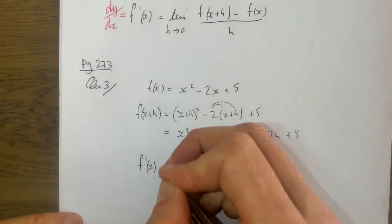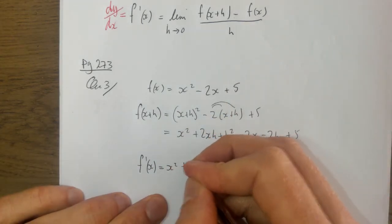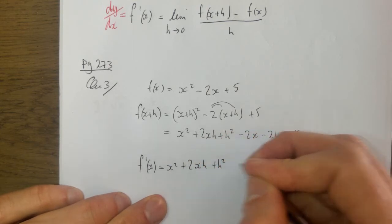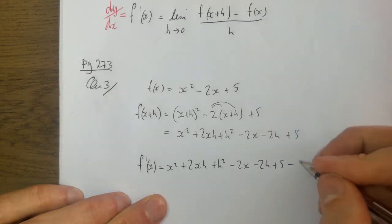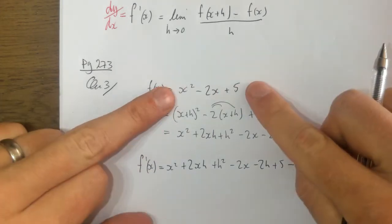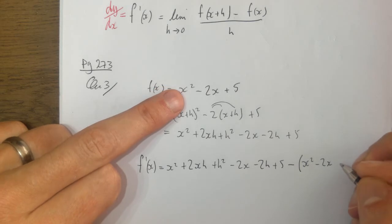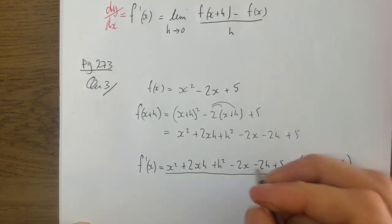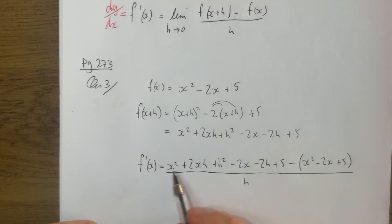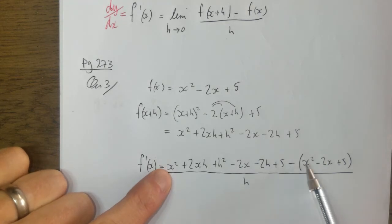So we write f dash x, which is differentiating: f of x plus h - which is the expanded expression - minus f of x, put that in brackets so we subtract all of it, all over h. We've got this big long expression on top of the fraction, and we're going to try and tidy that up. Looking at like terms: x squared minus x squared, so they cancel.